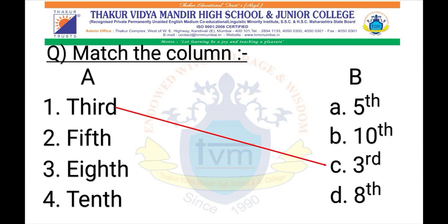Now let's match the ordinal name to its correct ordinal number. The first one is done for you. T-H-I-R-D — that's 3rd, so we match it with the ordinal number 3rd. Rest you do it on your own.